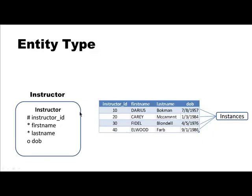Here is the instructor entity type with its corresponding table. Each row in the table represents an entity instance — row 1 represents the instructor whose name is Darius Bookman, row 2 represents another instructor, and so on. That's the connection between entity types and entity instances: the type is the concept — 'instructor' has an ID, first name, last name, and possibly a date of birth — and we're not talking about any specific instructor. We're talking about what is common to all instructors. All instructors have these properties; they may take on specific values for each attribute. Each instance has its own value for each of the attributes.